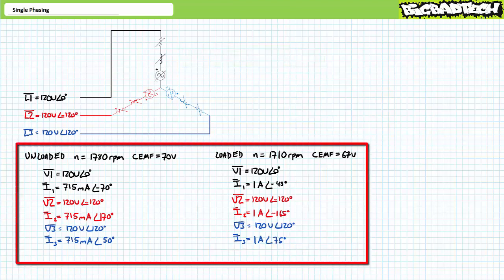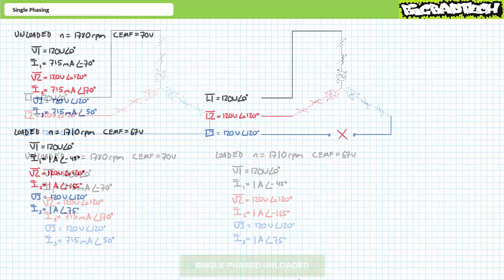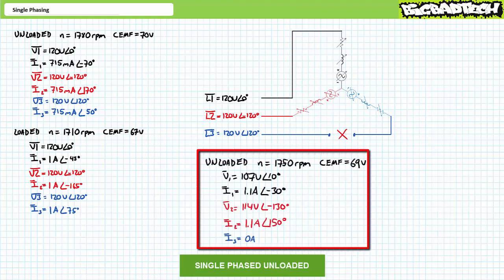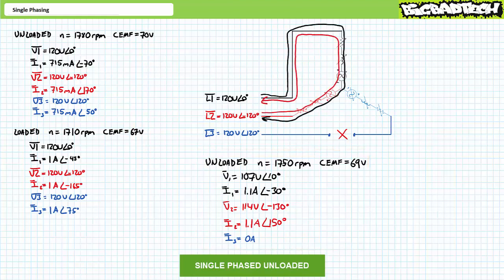Let's use those figures as the basis of comparison for single phasing events. Consider an unloaded Y-configured motor single phased while running by the unexpected loss of phase L3. The motor emits a growling sound and speed drops from 1780 rpm down to 1750 rpm. At that reduced speed, each winding now experiences only 69 volts of counter-electromotive force. Current in line 3 — the lost phase — is zero amps. Two branches of the Y configuration remain connected, with a single path for current through the series combination of windings one and two. Although you'd think they'd divide the line-to-line differential evenly, while the unbalanced motor is still running, they don't.